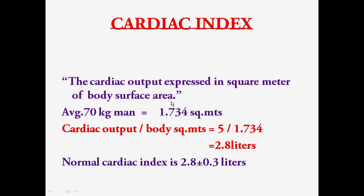The next topic is cardiac index. Cardiac index is the cardiac output expressed per square meter of body surface area. For an average 70 kg man, the body surface area is 1.734 square meters. So cardiac index equals 5 ÷ 1.734, which gives 2.8. The normal cardiac index is 2.8 ± 0.3 liters per minute per square meter.